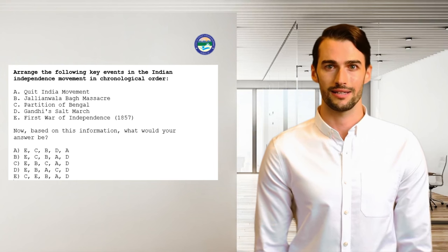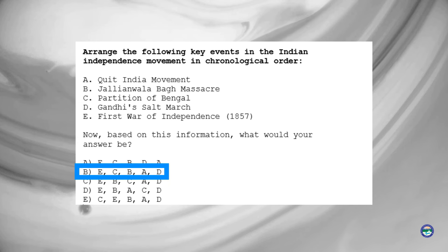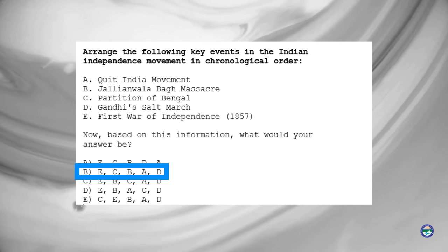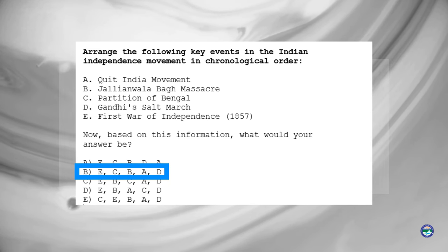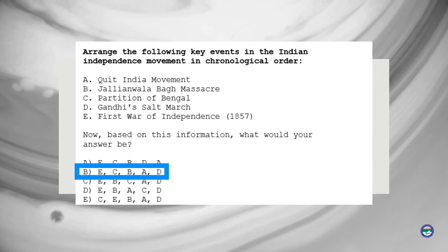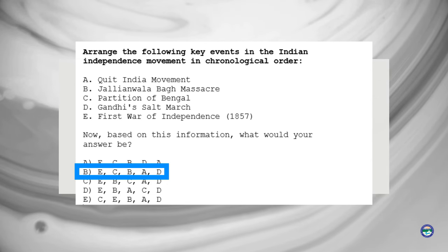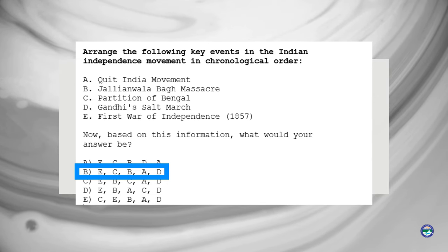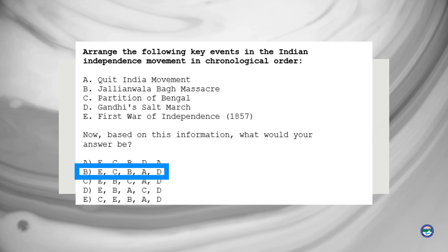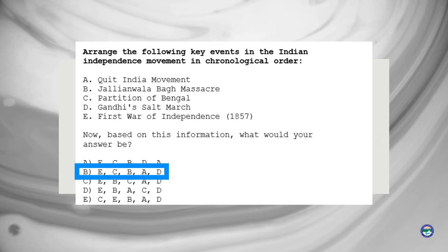Let's consider an example related to the Indian freedom struggle. Take a moment to think about the correct sequence and select the most appropriate option. The correct answer in this case is option B. The chronological order of these key events in the Indian independence movement is as shown.